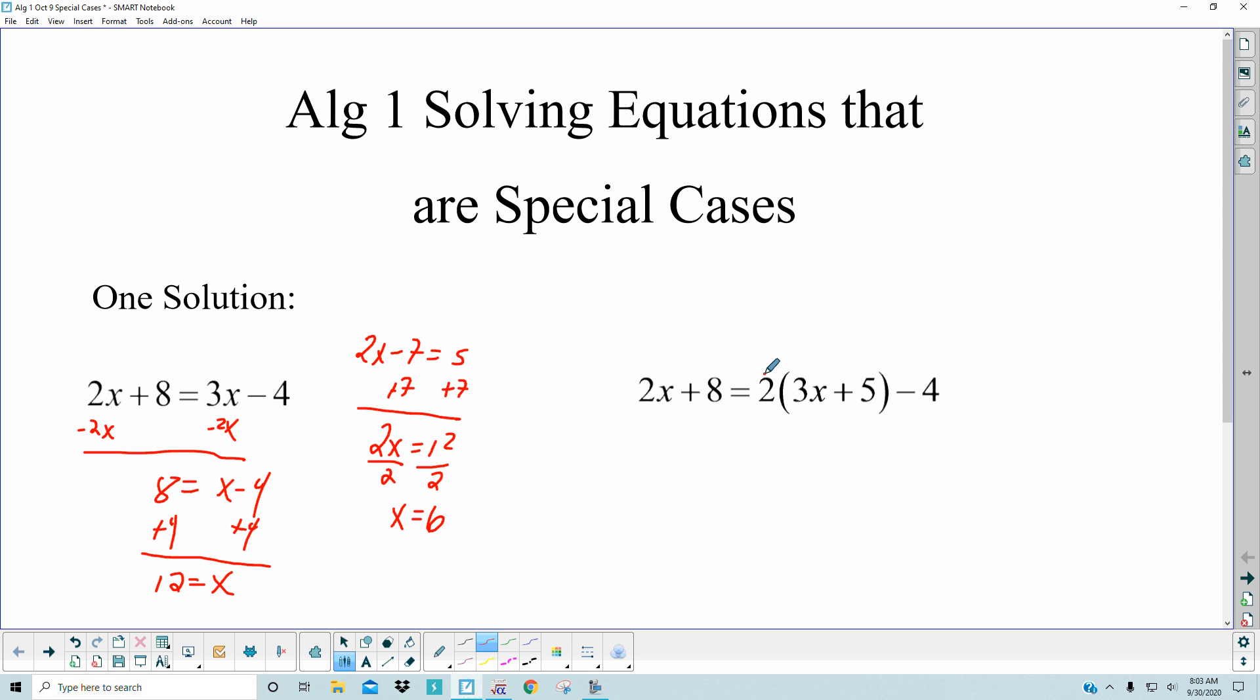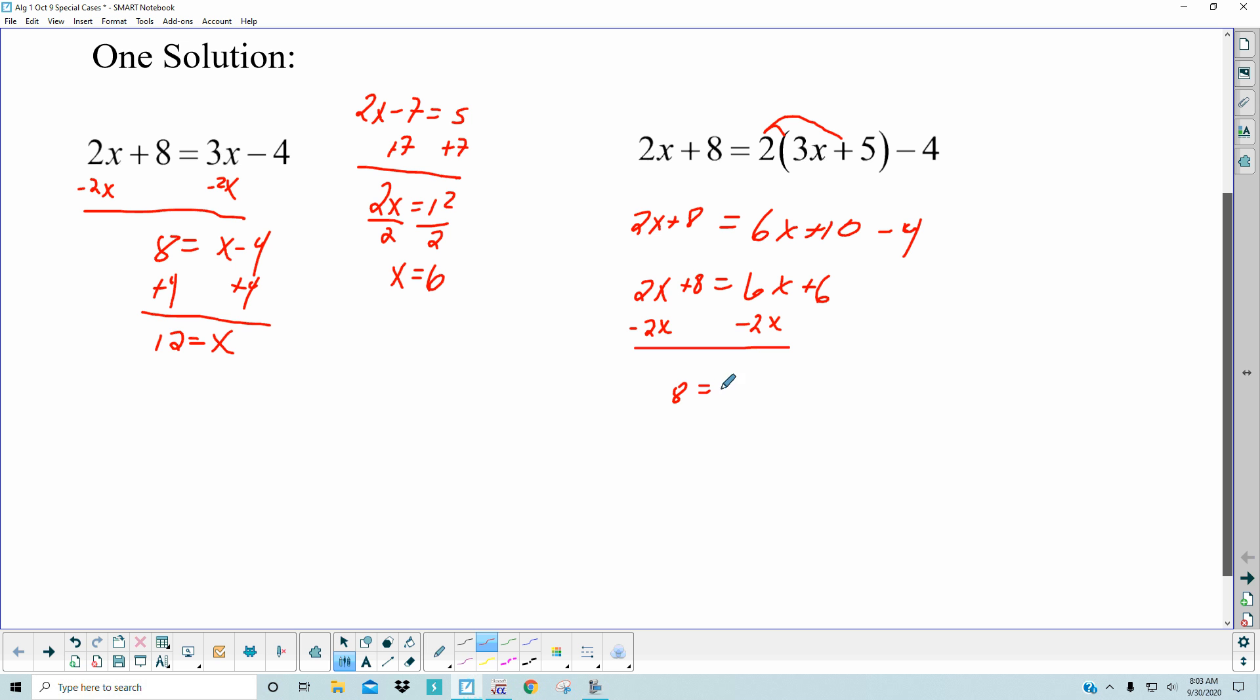Coming over to this one, you would distribute the 2 inside. So you have the left side is just 2x plus 8, and then you get 6x plus 10, and then the minus 4 is still there. So 2x plus 8 is equal to 6x plus 6. Then you're going to collect the x's, so subtract the 2x off of both sides. So then you have 8 is equal to 4x plus 6, subtract the 6, and you get 2 is equal to 4x, and then you divide by 4, and it reduces down to a half. So again, what I'm pointing out is you get one answer.